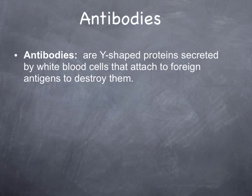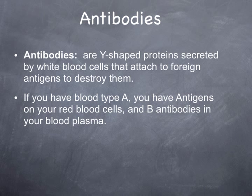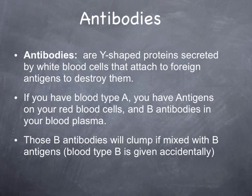Antibodies are Y-shaped proteins secreted by white blood cells. White blood cells function to protect you — they attack anything that's foreign, like a bacteria cell, or in terms of blood type, if there are foreign antigens they discover. Their goal is to destroy them. So if you are a person with blood type A, you have those A antigens on the surface of your red blood cells, and in your blood serum or plasma, you have B antibodies. Those B antibodies will cause clumping if mixed with B antigens.